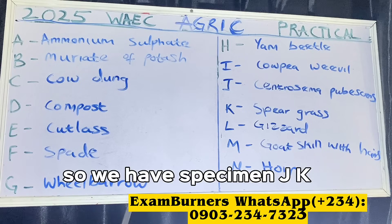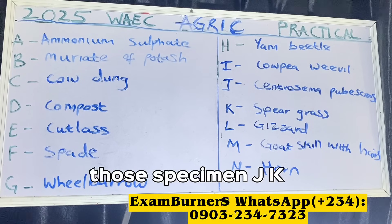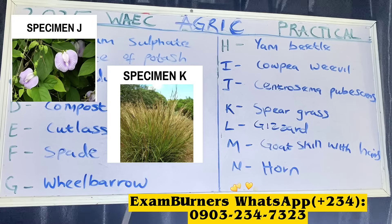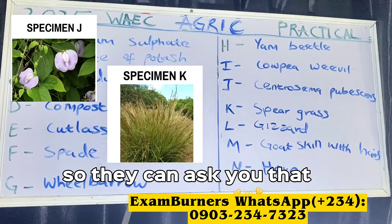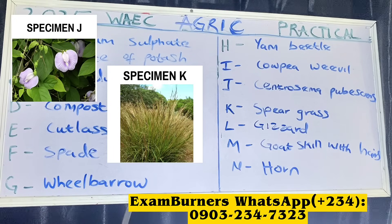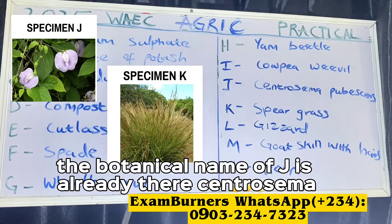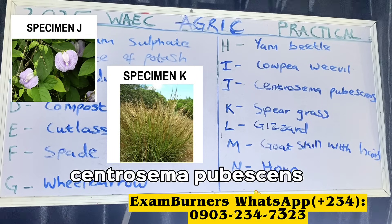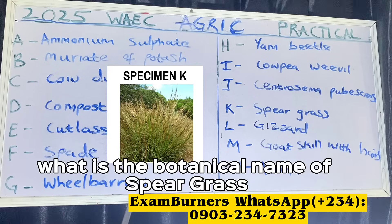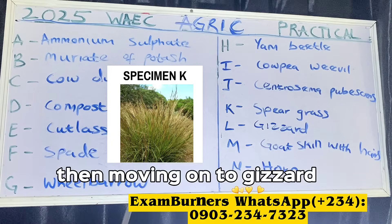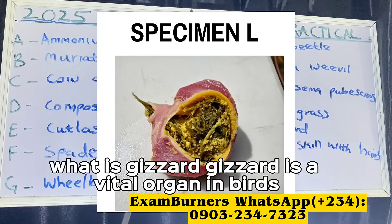Specimens J and K are plants, so questions can cover: what are the functions of these plants, what are their uses, and what are their botanical names? The botanical name of specimen J is Centrosema pubescens. What is the botanical name of specimen K, spear grass? Moving on to specimen L, the gizzard.